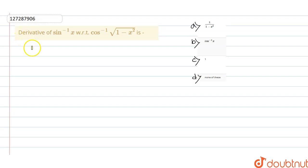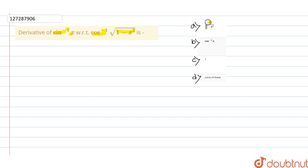Welcome guys. The question is: the derivative of sin inverse x with respect to cos inverse of under root of 1 minus x squared is — option a: 1 by 1 minus x squared, option b: cos inverse x, option c: 1, and option d: none of these.